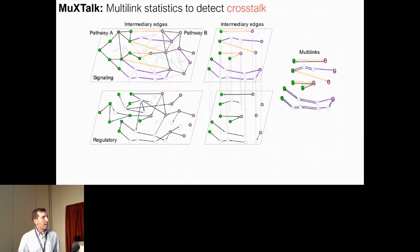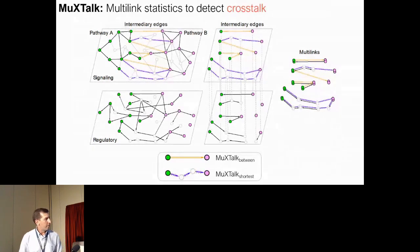Based on this observation, we hypothesize that the multilink statistics of the intermediary edges between pathways might shed some light on crosstalk. We devised two complementary versions of this method, which relies on direct edges between pathways and longer-range interactions, in other words, shortest paths.